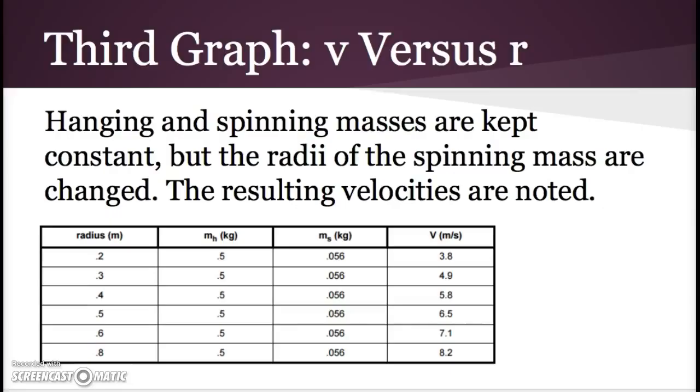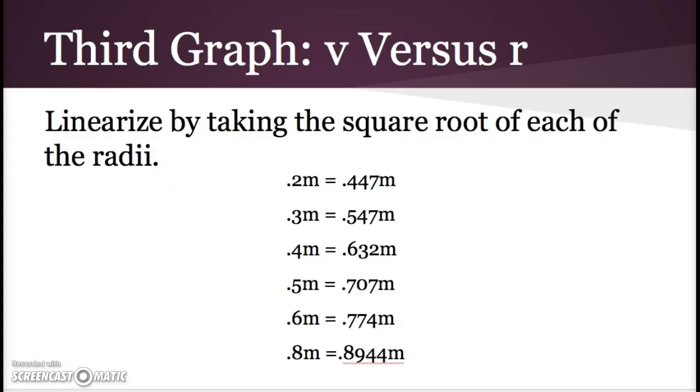Our third graph is v versus r. Hanging and spinning masses are kept constant, but the radii are changed. The resulting velocities are noted. We linearized by taking the square root of each radius.